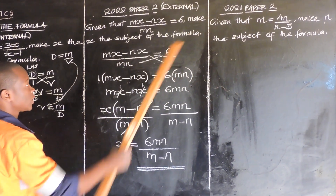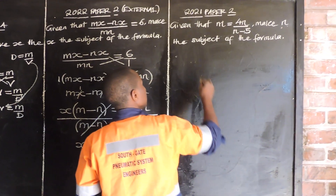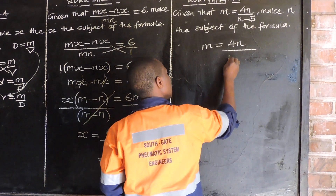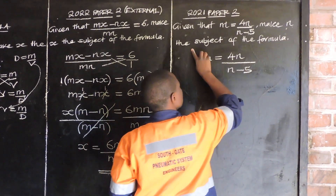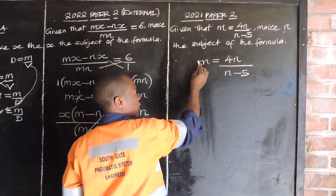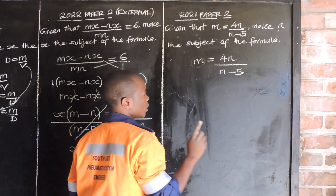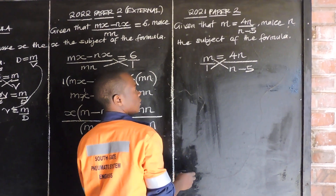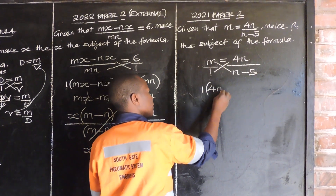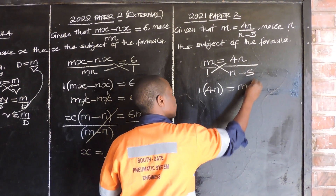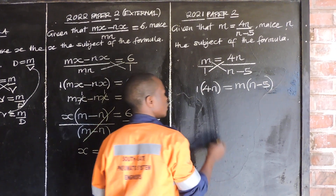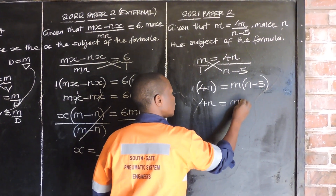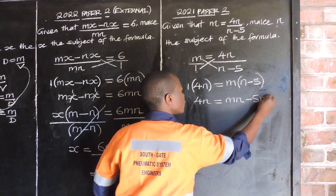Now let us look at 2021 paper 2. It says: given that m is equal to 4n over n minus 5, make n the subject of the formula. Currently m is the subject. We write m over 1 and cross multiply: 1 times 4n equals m times n minus 5. So 1 times 4n gives 4n, and m times n gives mn, m times negative 5 gives negative 5m.